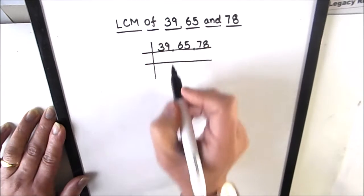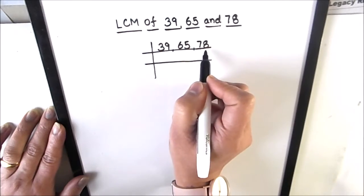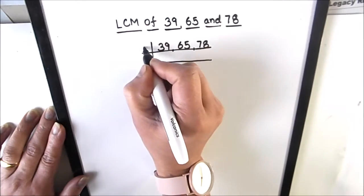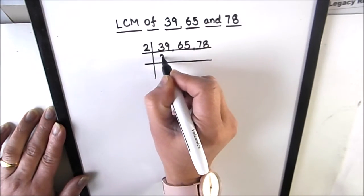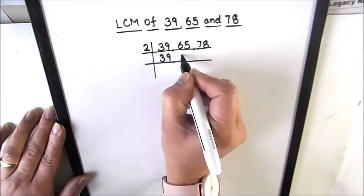So let's divide 39, 65, and 78. As 78 is an even number, we will use the first prime number 2 to divide 78. 39 and 65 will be as is.